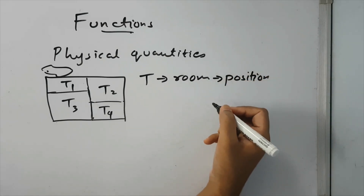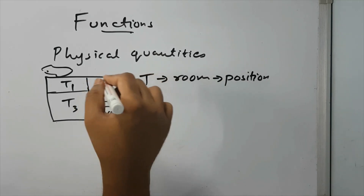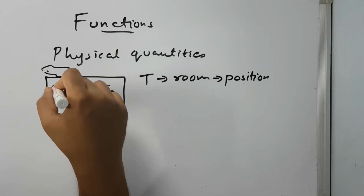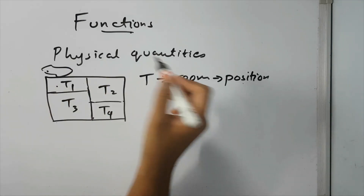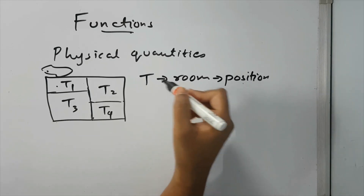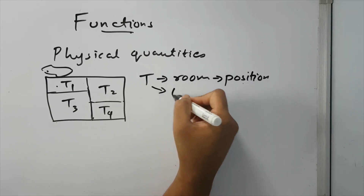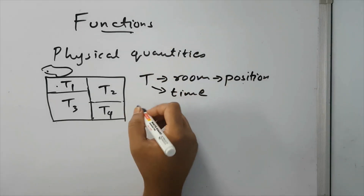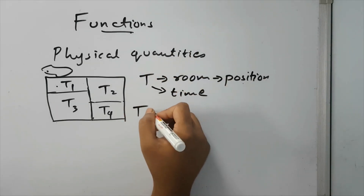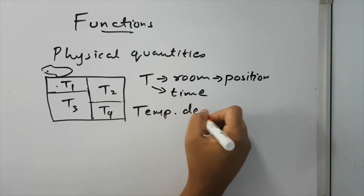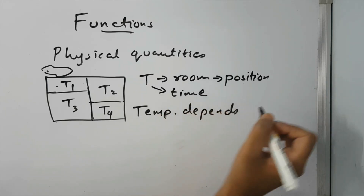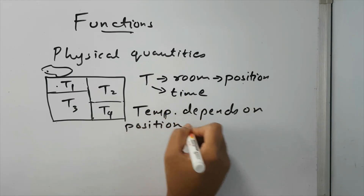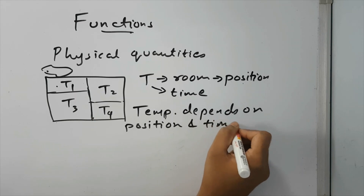Now, similarly, if I fix a position — say I look at one particular room — in this room the temperature in the morning will be something different, and in the evening the temperature will be something different. That means temperature also depends on what? Time. So in short, temperature depends on position and time.